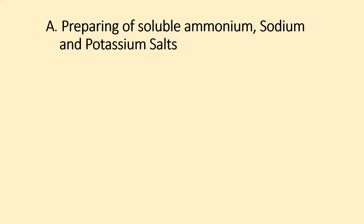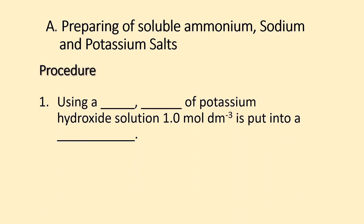Preparing soluble salts — ammonium, sodium, and potassium. The main objective is to complete the handout. Procedure: the most important thing when doing the experiment is to mention the concentration and volume. Using a pipette, measure 25 cm³ of potassium hydroxide solution with a concentration of 1 mol per dm³ and put it into a conical flask.